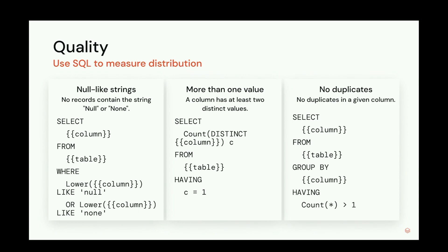You can use other approaches like data sampling and various range queries. On screen are three simple queries you can apply. You can leverage cardinality, percent null, percent zero. You can check if two tables have the same records or the same number of records — useful if you're doing a migration. You have the flexibility to create quality rules that measure your exact business requirements.